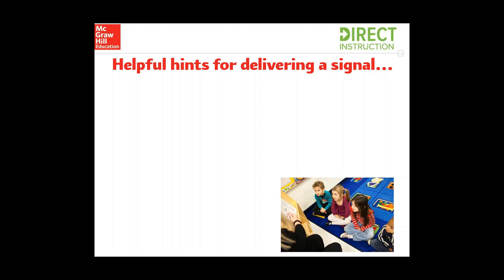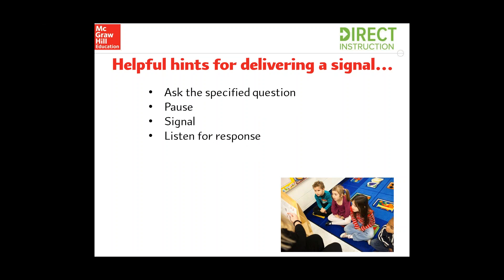Here are some helpful hints for delivering a signal. Regardless of what level you're teaching, you'll be using either a visual or an audible signal on a daily basis in Reading Mastery. First, ask the specified question before you deliver the signal, making sure students are paying attention and that you give them the directions first. Then give some think time — a quick pause — then signal, whether visual or audible. Make sure your signal is clear so every student can see or hear it. Listen for the response, correct immediately if necessary, and then move quickly to the next task.